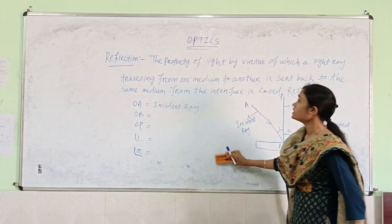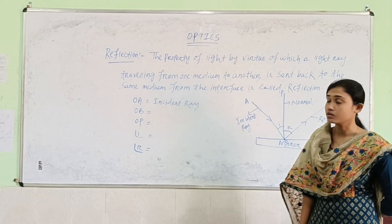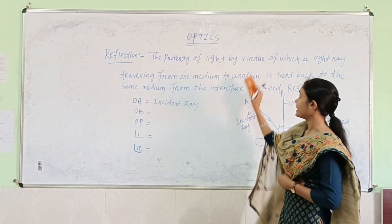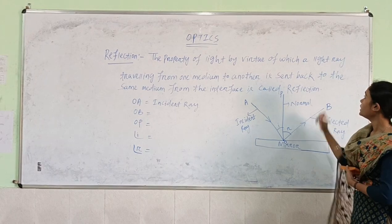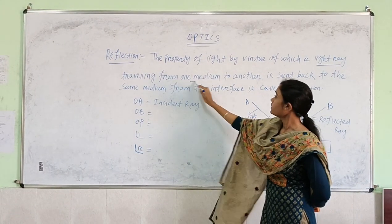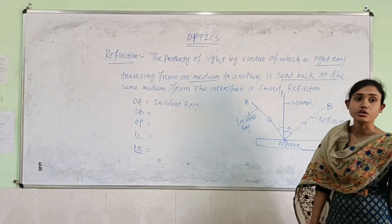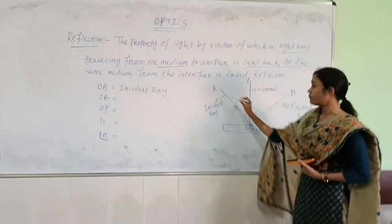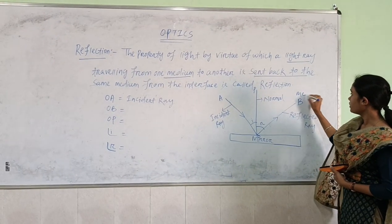In optics we will study about reflection. What is reflection? The reflection statement says that it is the property of light by virtue of which a light ray travelling from one medium to another medium is sent back to the same medium. When a light ray is travelling from one medium — let's say medium 1.